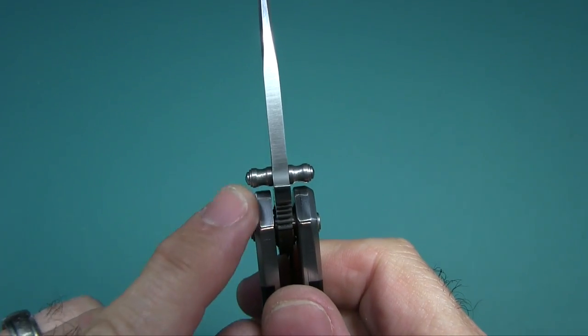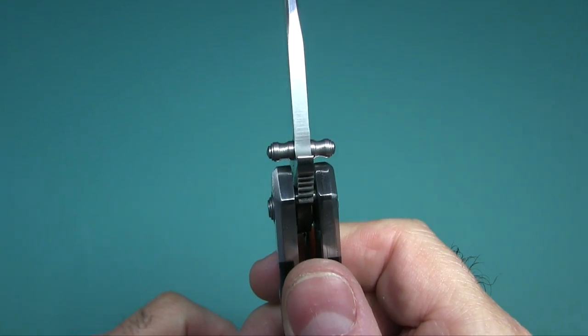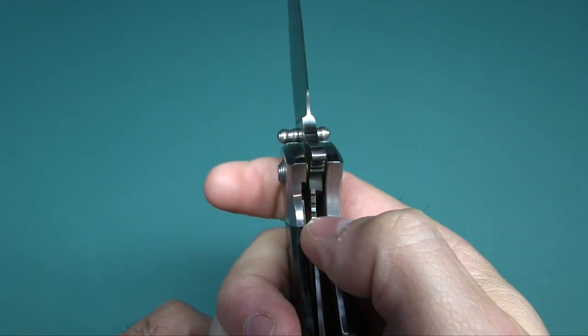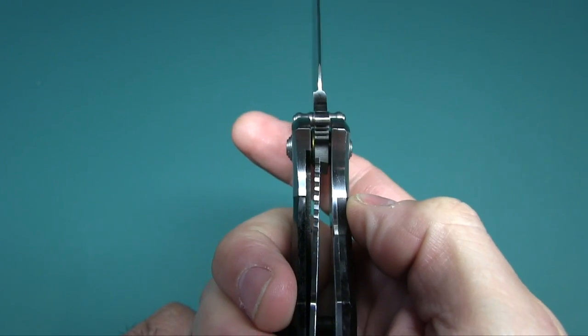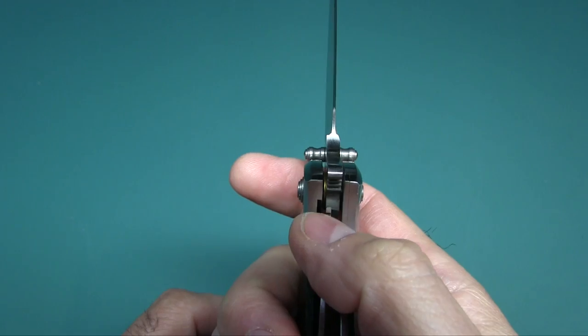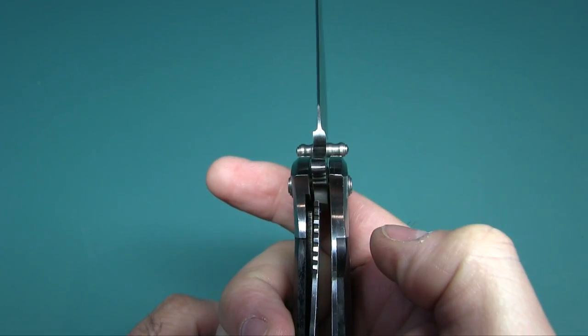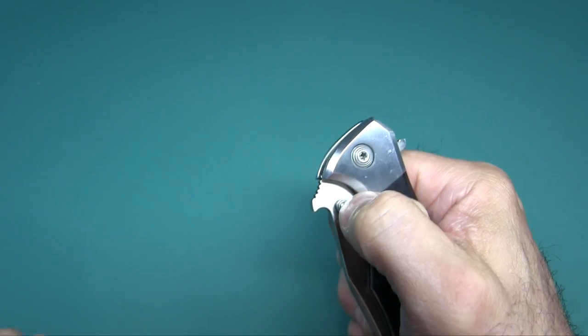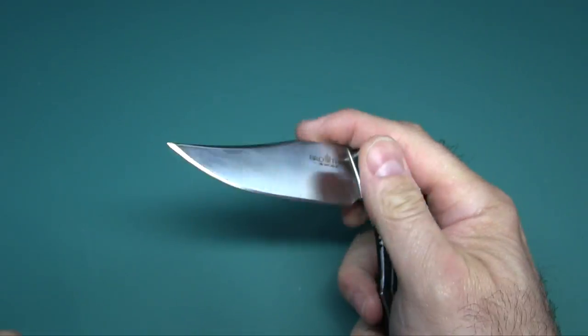Look how that flies open. You can see what I mean by barbell or ball. By the way, it's a liner lock. You can see the lock up is perfect, fully behind the blade with a lot of room to wear.